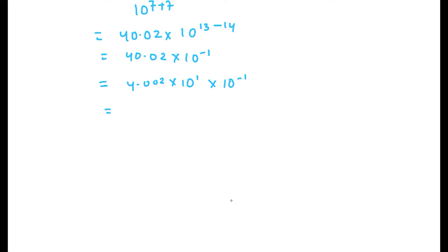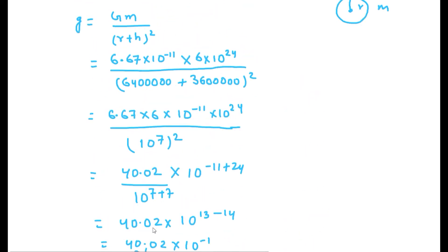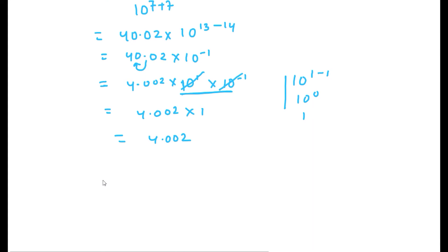We can write 40.02×10⁻¹ as 4.002×10¹×10⁻¹. Since the powers cancel (10¹ × 10⁻¹ = 10⁰ = 1), the result is 4.002. So the required value of g is 4.002 meters per second squared.